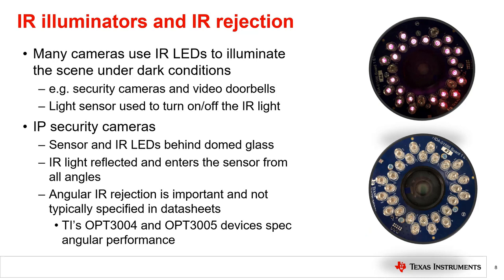IR rejection across angles can also be important. For example, in IP network cameras, the IR LEDs are commonly placed in a ring around the camera, as shown. While commonly placed behind glass, the IR light may reflect off the glass and enter the light sensor at all angles. This means that the sensor should reject IR light coming from all angles and not just from zero degrees as typically specified. TI's OPT-3004 and OPT-3005 specify IR rejection over a range of angles of incidence for this reason. OPT-3005 is specifically designed for this type of application.